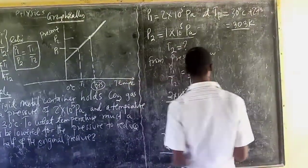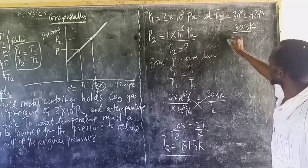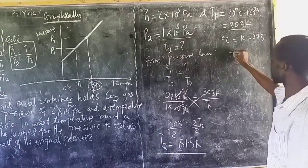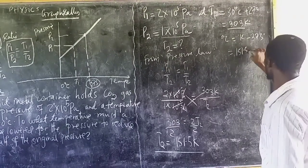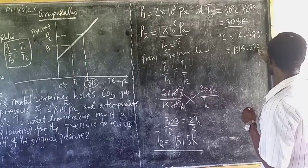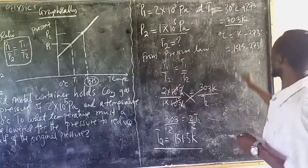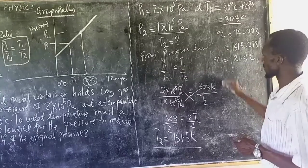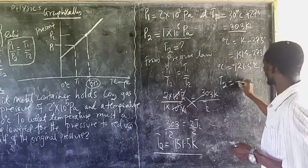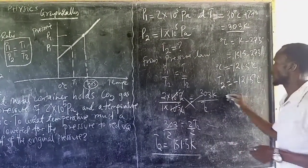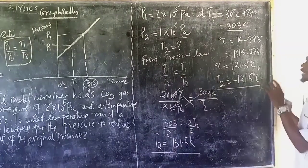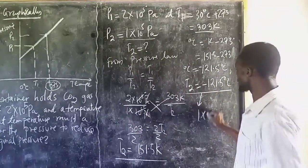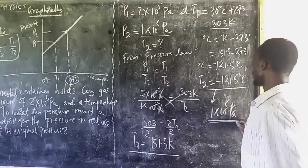We need to convert T2 to degrees Celsius: degrees Celsius equals Kelvin minus 273, so 151.5 minus 273 equals negative 121.5 degrees Celsius. Therefore, the second temperature is negative 121.5 degrees Celsius, meaning the pressure of 1 times 10 to the power 5 Pascals was recorded at this temperature.